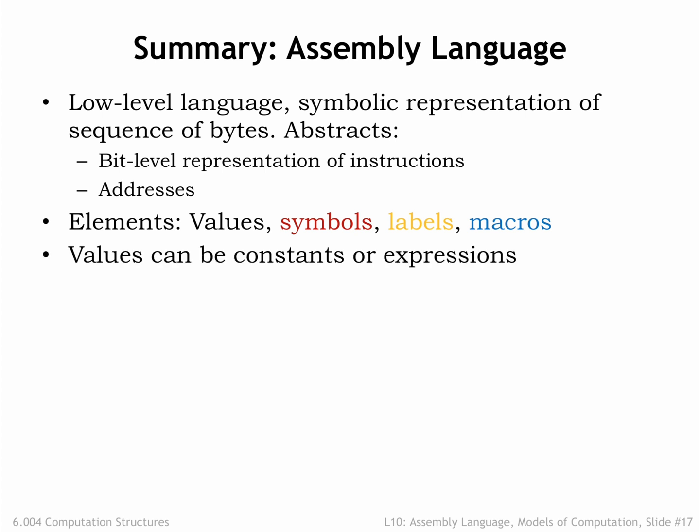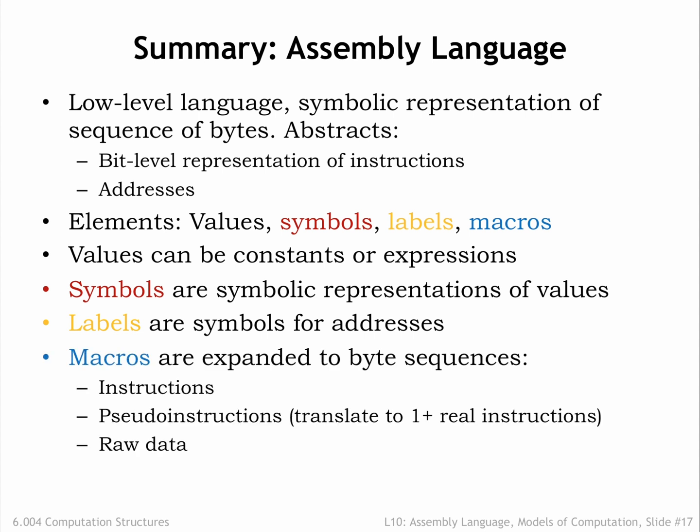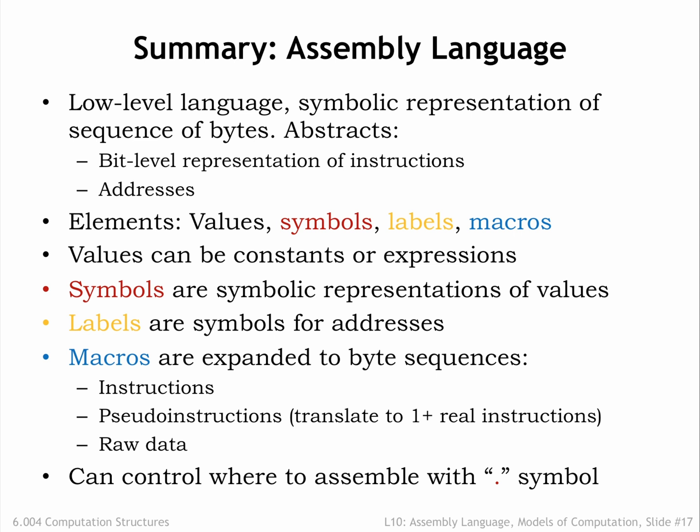Values can be written as constants or expressions involving constants. We use symbols to give meaningful names to values so that our programs will be more readable and more easily modified. Similarly, we use labels to give meaningful names to addresses in main memory and then use the labels in referring to data locations in load or store instructions, or to instruction locations in branch instructions. Macros hide the details of how instructions are assembled from their component fields, and we can use dot to control where the assembler places values in main memory.